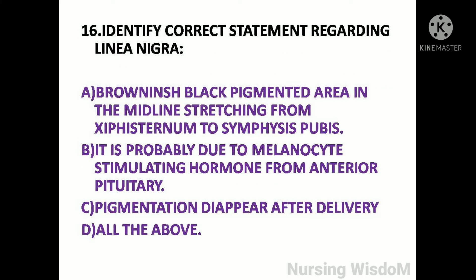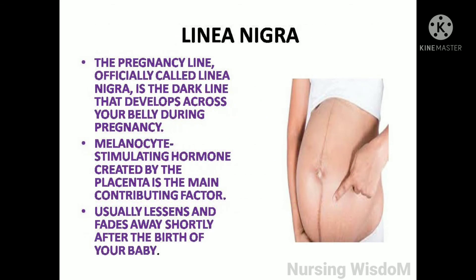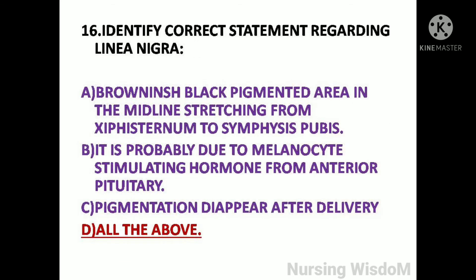Next question: Identify the correct statement regarding linea nigra. Option A: brownish-black pigmented area in the midline stretching from xiphisternum to symphysis pubis; option B: it is probably due to melanocyte stimulating hormone from the anterior pituitary; option C: pigmentation disappears after delivery; option D: all the above. The pregnancy line, officially called linea nigra, is the dark line that develops across the belly during pregnancy. Melanocyte stimulating hormone created by the placenta is the main contributing factor, and it usually lessens and fades away shortly after birth. So here all statements are correct, and the answer is option D, all the above.